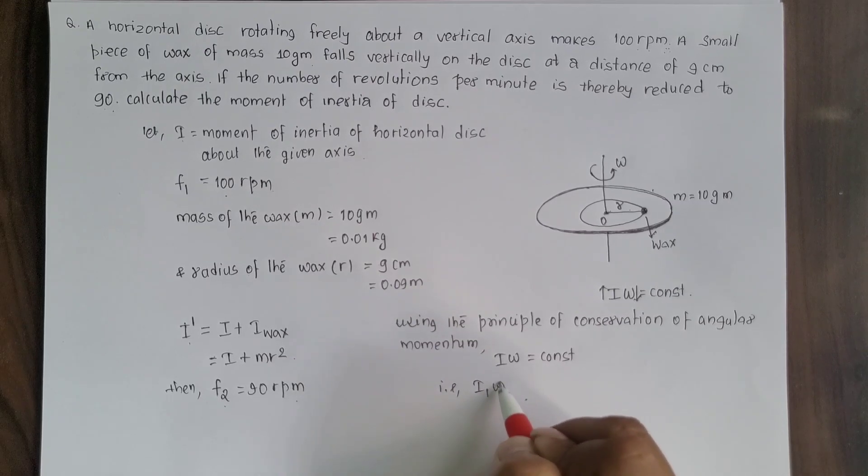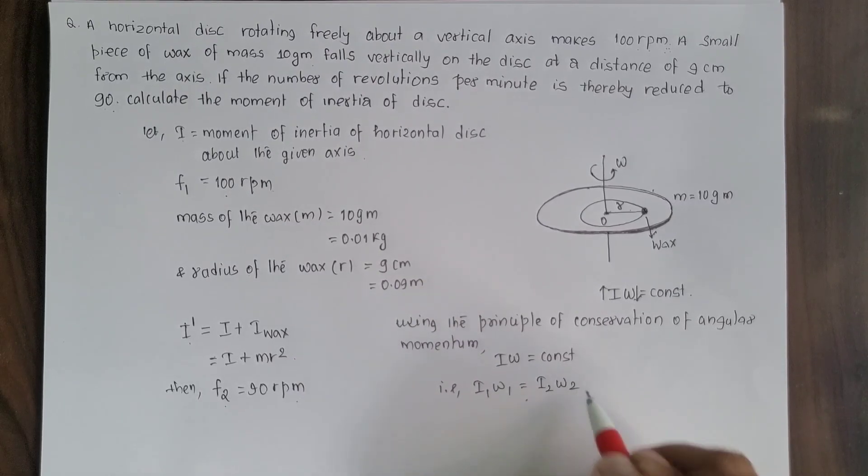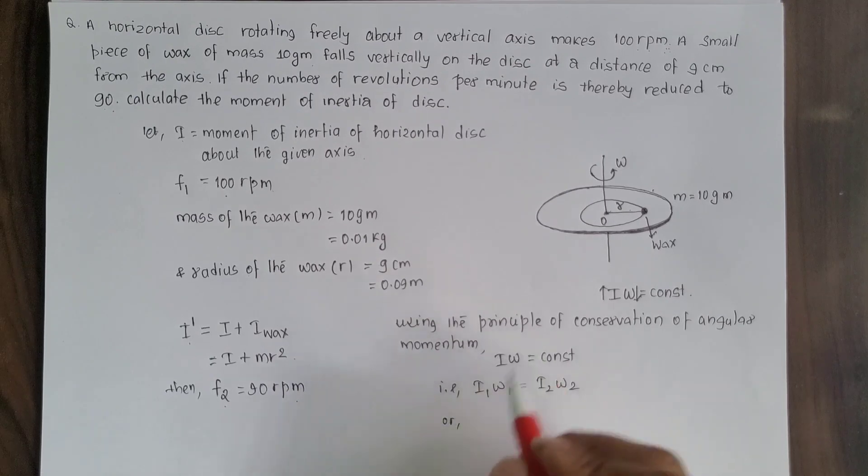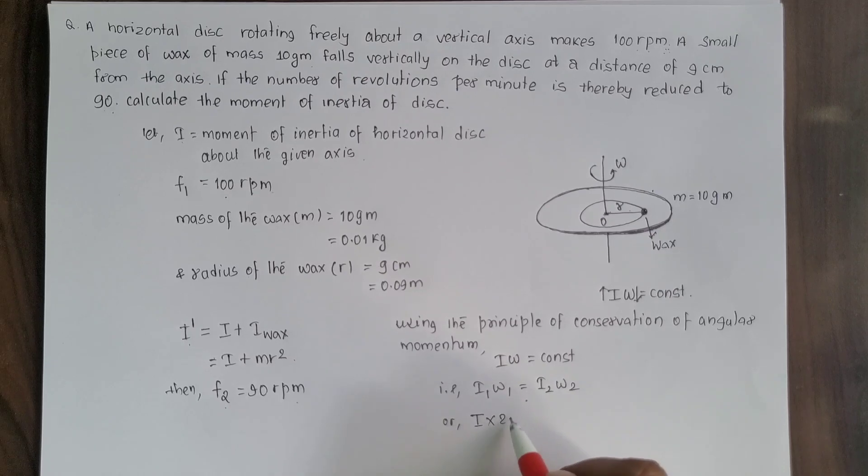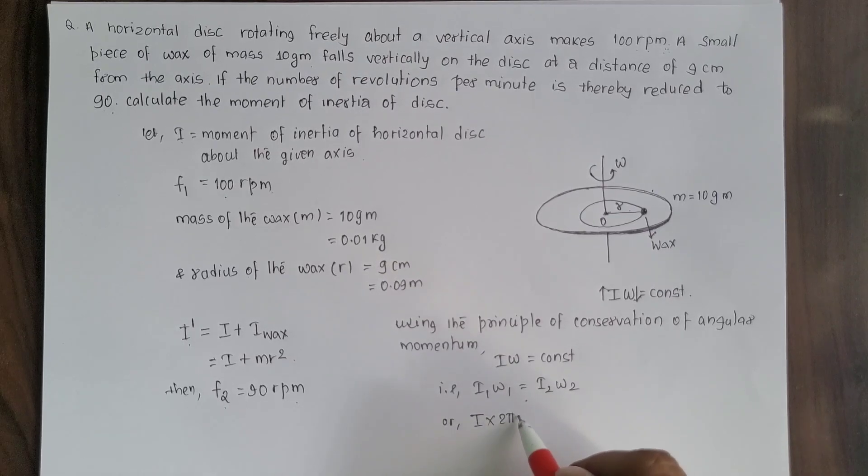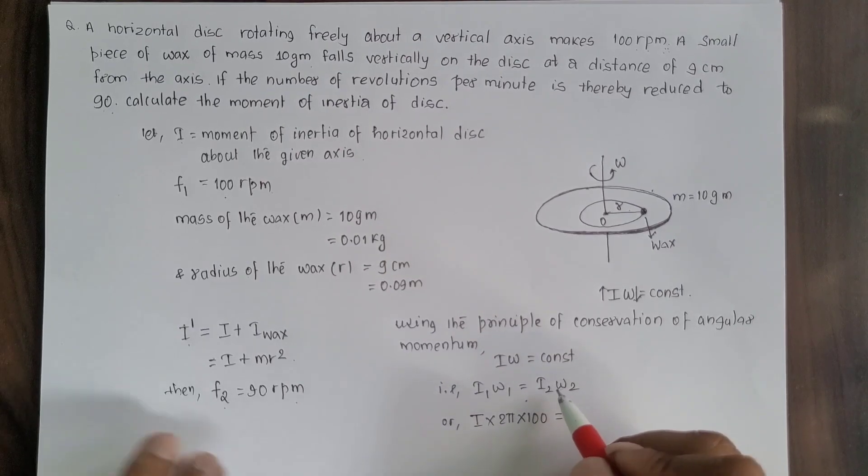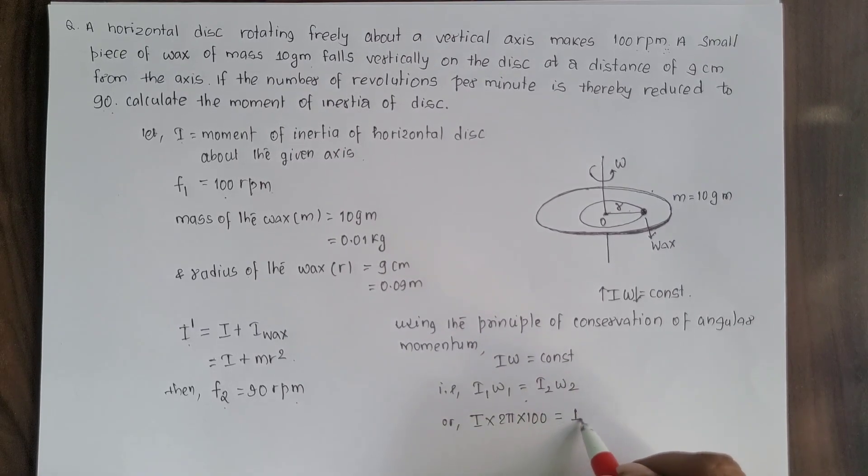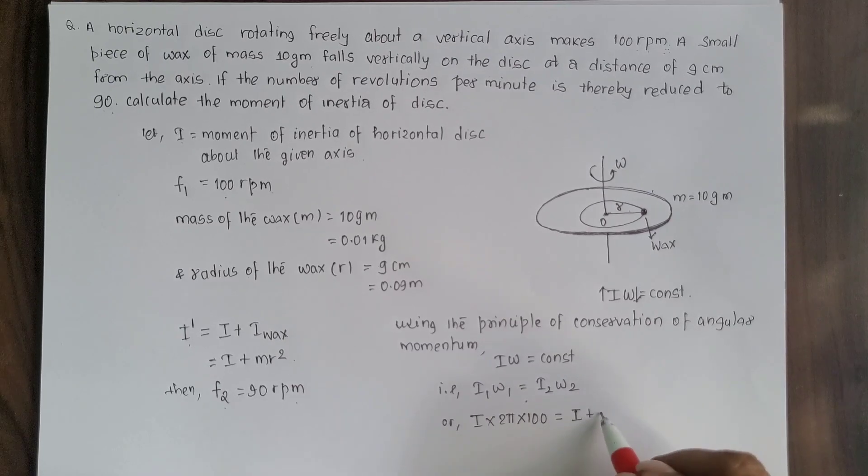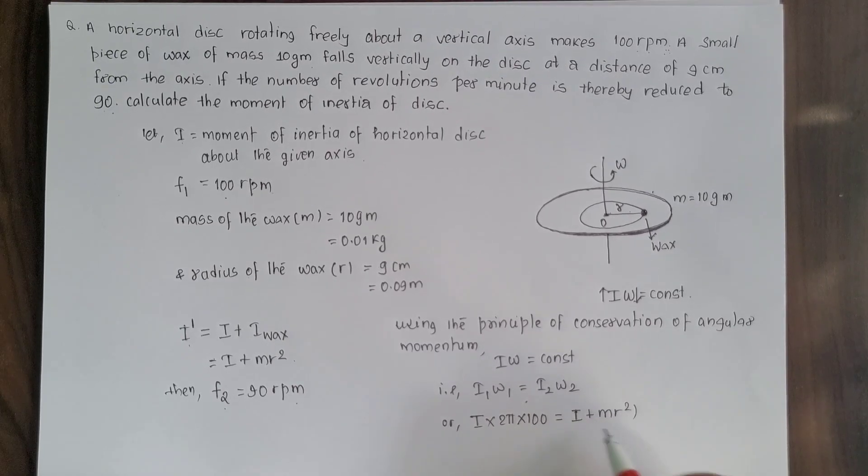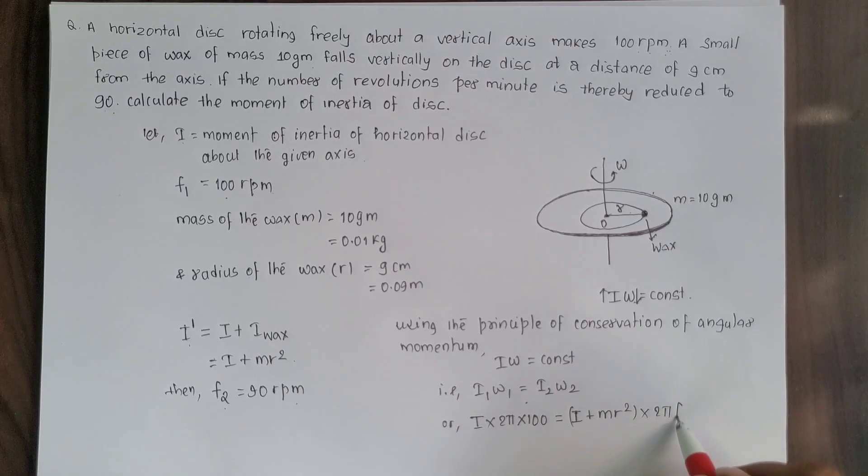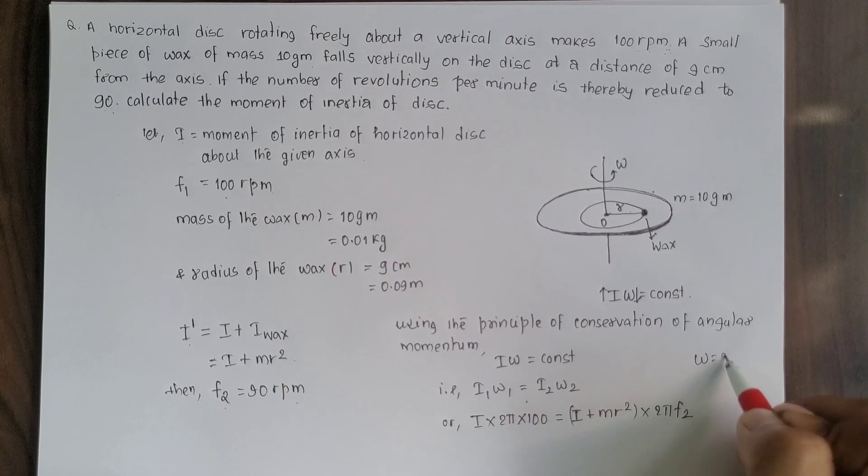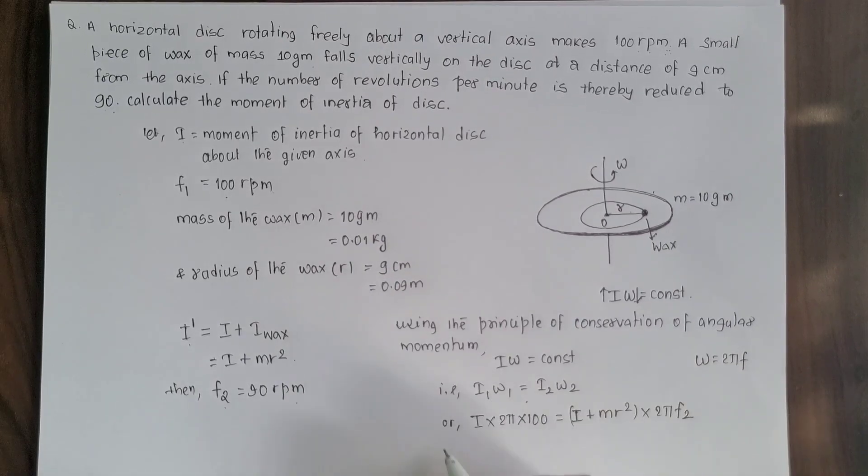I1 omega1 equals I2 omega2. Initial angular momentum of the disc, suppose is I times initial angular velocity which is 2π times f, where f is 100 revolutions per minute, which equals I2, which is initial moment of inertia I plus moment of inertia of wax mr squared, times new angular velocity 2π times f2. Since omega equals 2π times f.